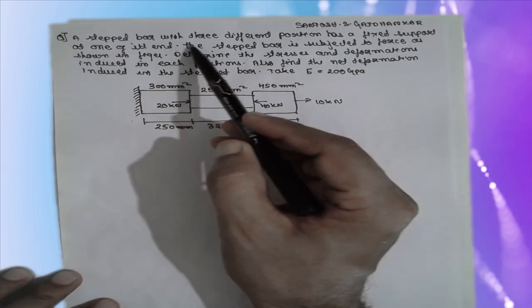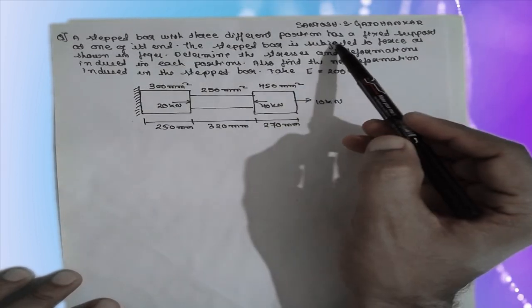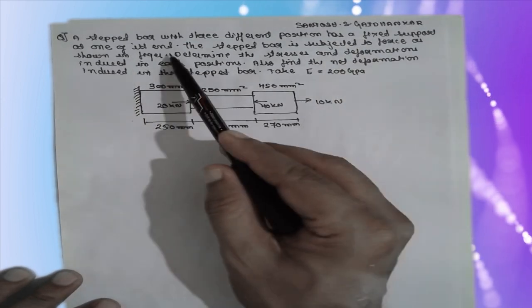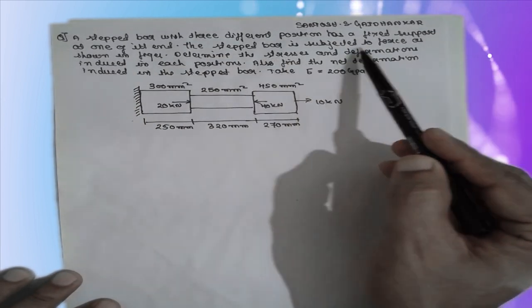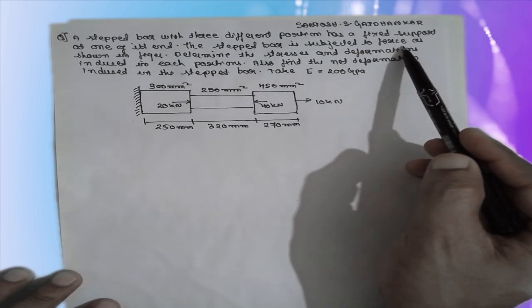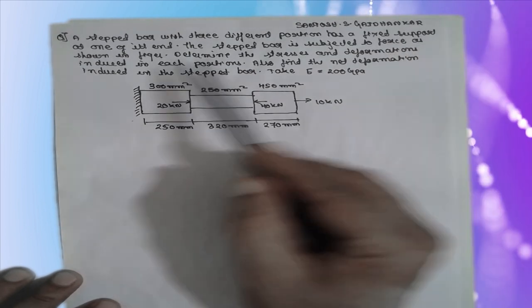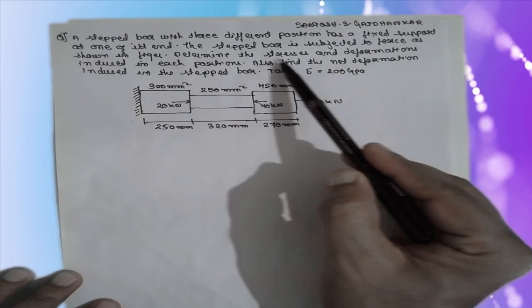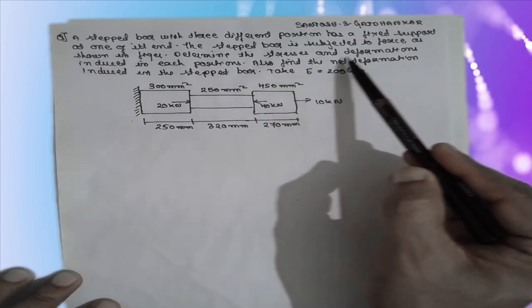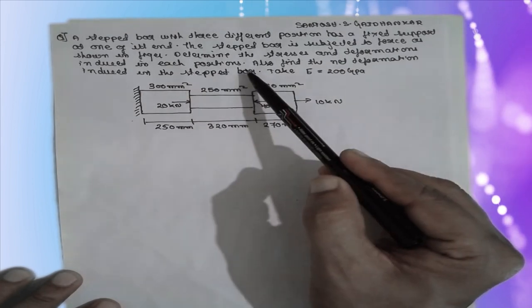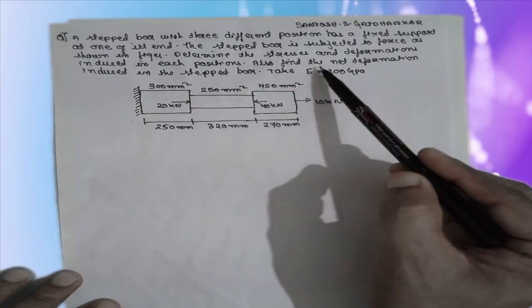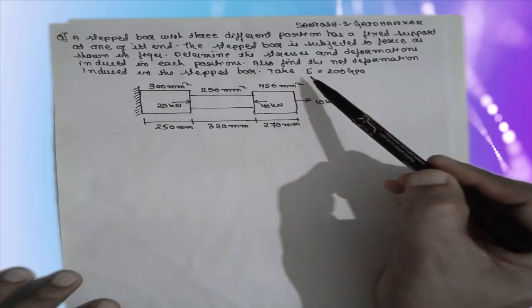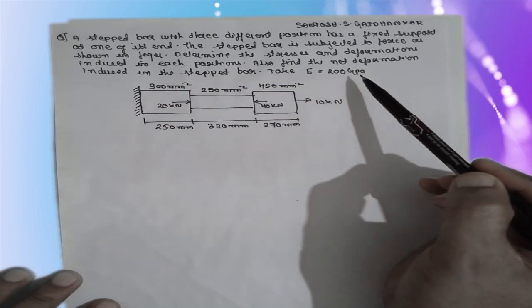A stepped bar with three different portions has a fixed support at one of its ends. The stepped bar is subjected to forces as shown in the figure. Determine the stresses and deformation induced in each portion and also find the net deformation induced in the stepped bar, where E is equal to 200 GPa.